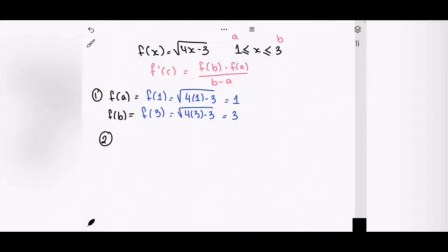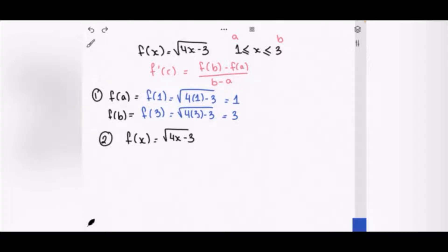The second step is to find the derivative of f(x). First we are going to rewrite the equation without the square root. So f(x) = (4x - 3) to the power of 1/2.